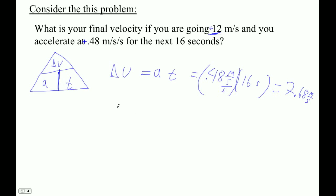So if you're already going 12 meters per second and you go 7.68 faster, that's going to be 19.68. You're going 19.68 meters per second.